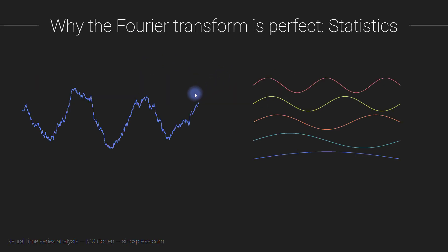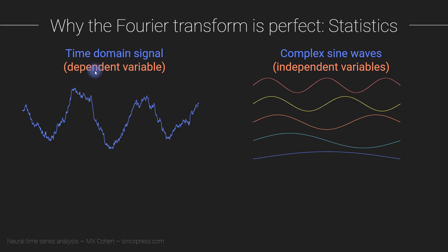Let's start from statistics. Let's think about a multiple regression problem. Imagine we have our data set — that's the signal. We have a series of independent variables. The time domain signal is the dependent variable, and the complex sine waves are our independent variables. We are thinking about this like a multiple regression or ANOVA problem, where we are trying to account for variance in the dependent variable — the time domain signal — based on variability in the independent variables.